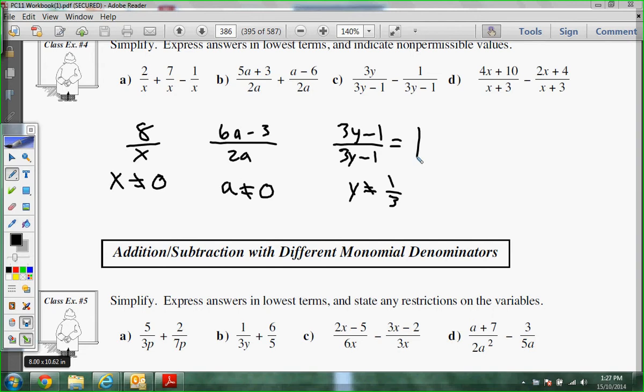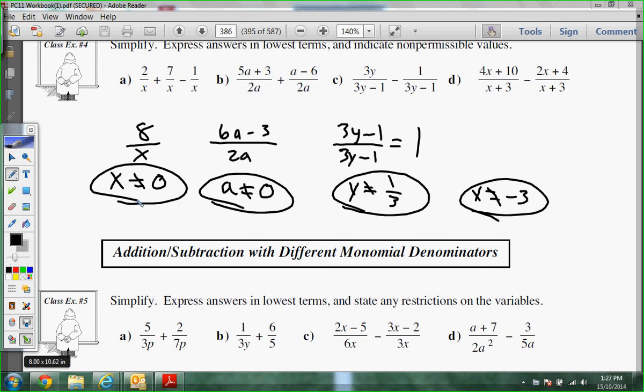And Logan, what's my non-permissible for d? Negative 3. Good. So x cannot be negative 3. That's my non-permissible. So these are your non-permissibles at the bottom if you're writing your notes in. We have a common denominator. 4x minus 2x, I get 2x. 10 minus 4, I get 6. Over x plus 3. Has anybody seen anything else I can do here? Yeah, I can make it smaller. I can take a 2 out on the top, which gives me an x plus 3. And what happens to the x plus 3s? They cancel. So your answer is actually 2 for the simplified fraction there. So remember, we always want to GCF and factor if we can.